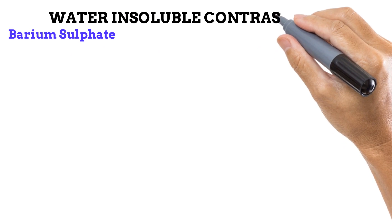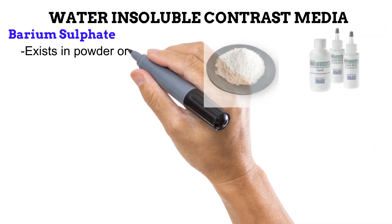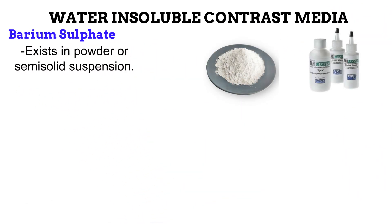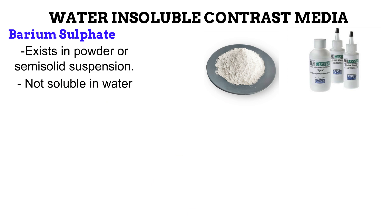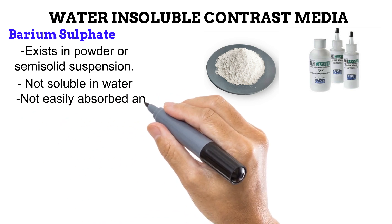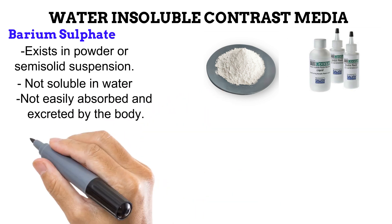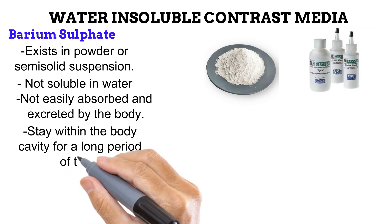Solubility is a measure of how much one substance dissolves in another. The positive contrast media — barium sulfate and organic iodine — are further classified based on their solubility in water. The first group is the water-insoluble contrast media: barium sulfate. Barium sulfate is usually produced in a powder or semi-solid colloidal suspension like a syrup. It is not soluble in water. The human body is made up of a lot of water, which means that when barium sulfate is introduced into the body, it is not readily absorbed and excreted — it will stay in the body for a long period of time.